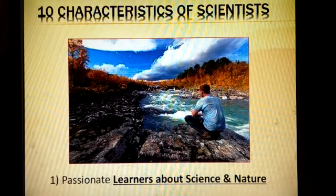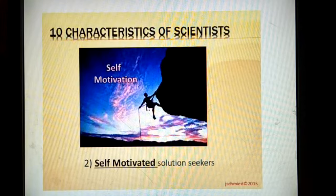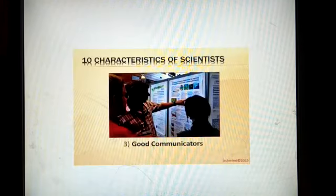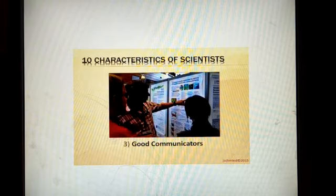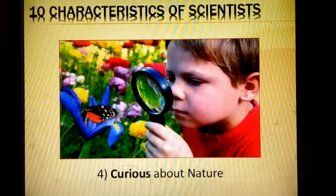A scientist is passionate for learning about science and nature. The second quality is he is self-motivated — he tries to find solutions through his own desire by doing different activities. He is also a good communicator, meaning he shares his own observations, philosophy, successes, and failures with his team and with other competitive teams. He is curious about nature.